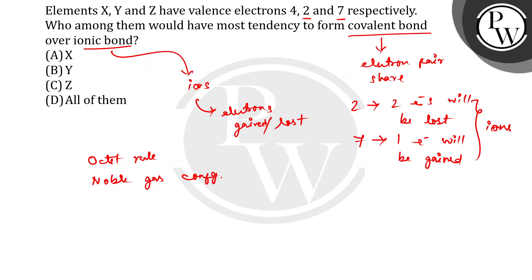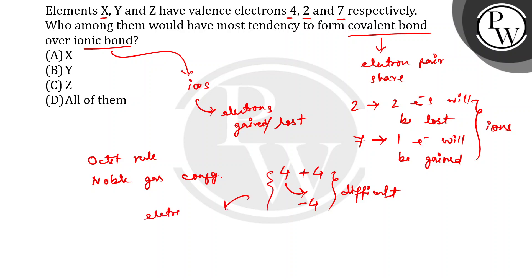Now, if we consider the element with four valence electrons — X — it would need to either gain four electrons or lose four electrons to achieve an octet. Both of those processes require a lot of energy and are difficult. So instead, X prefers to share its electrons. Because sharing is easier than completely losing or gaining four electrons, X will form a covalent bond.